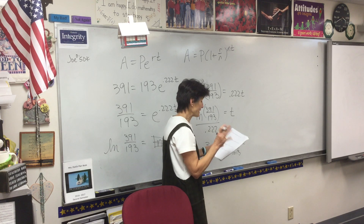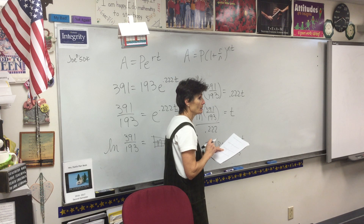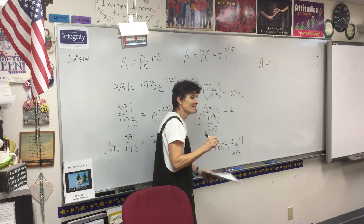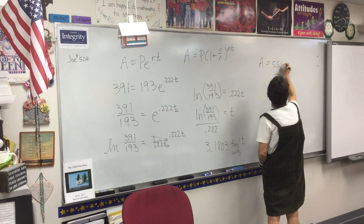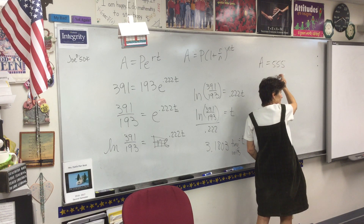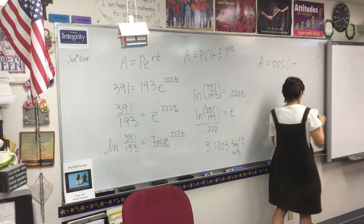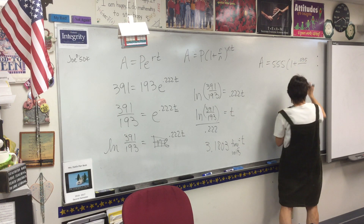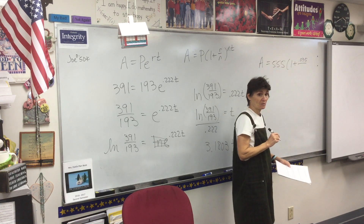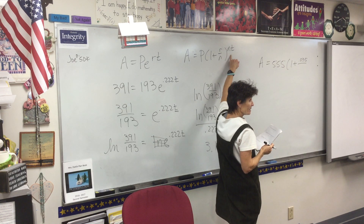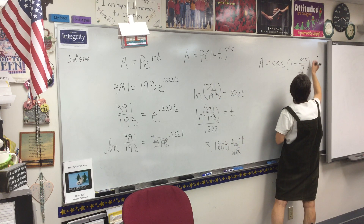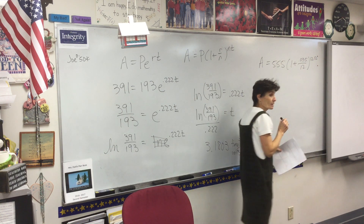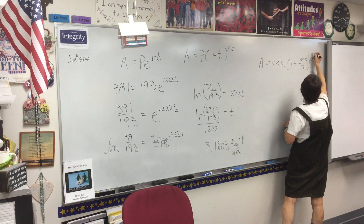So what goes where? What's A? A is how much I'm going to end up with — I don't know yet. I am depositing 555; this is the amount you start with. My interest rate is 0.035. Compounded monthly means my N is 12. For 12 years, so that exponent is actually just 144.